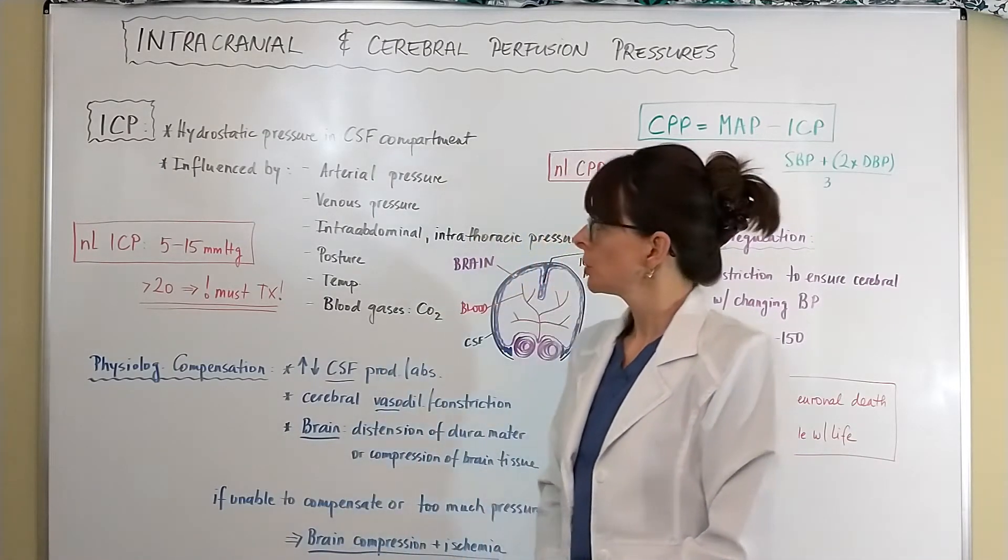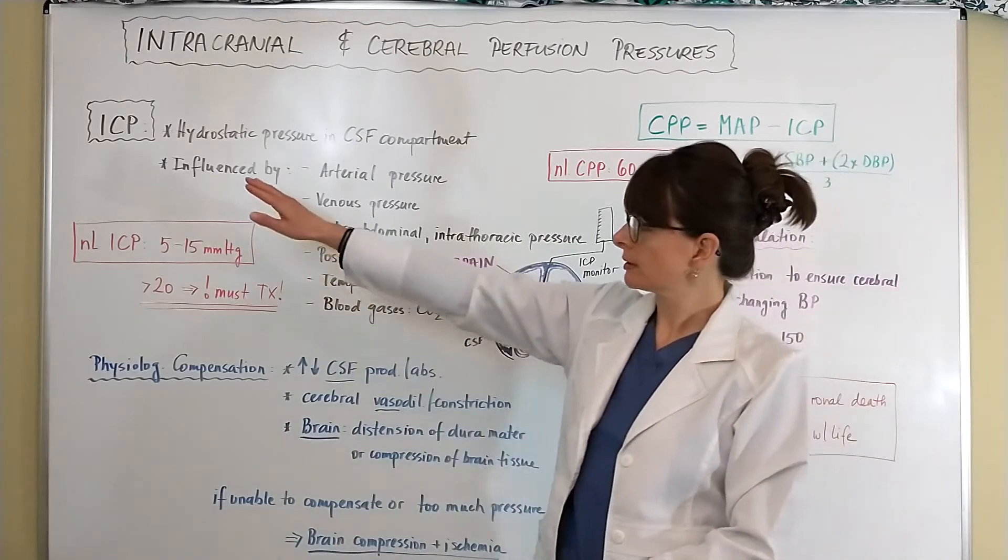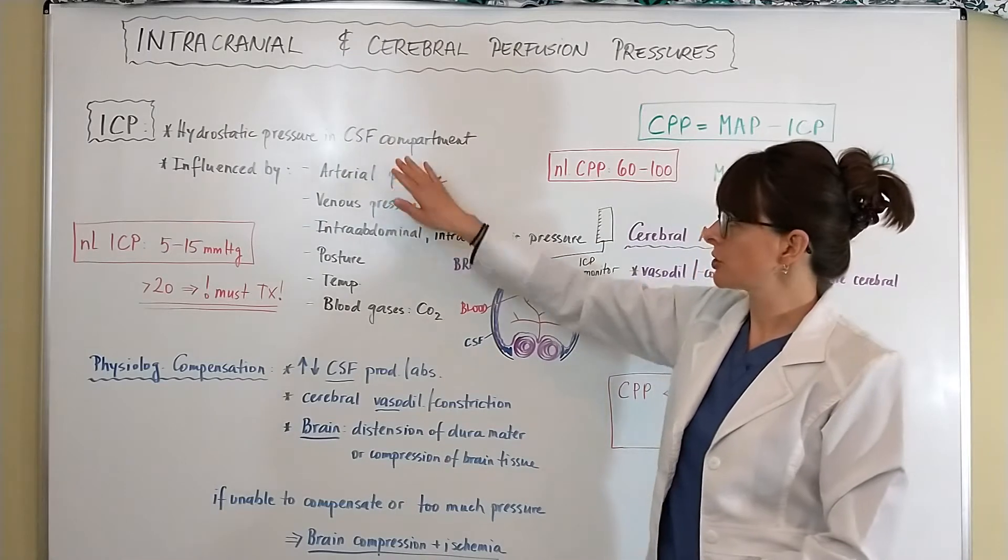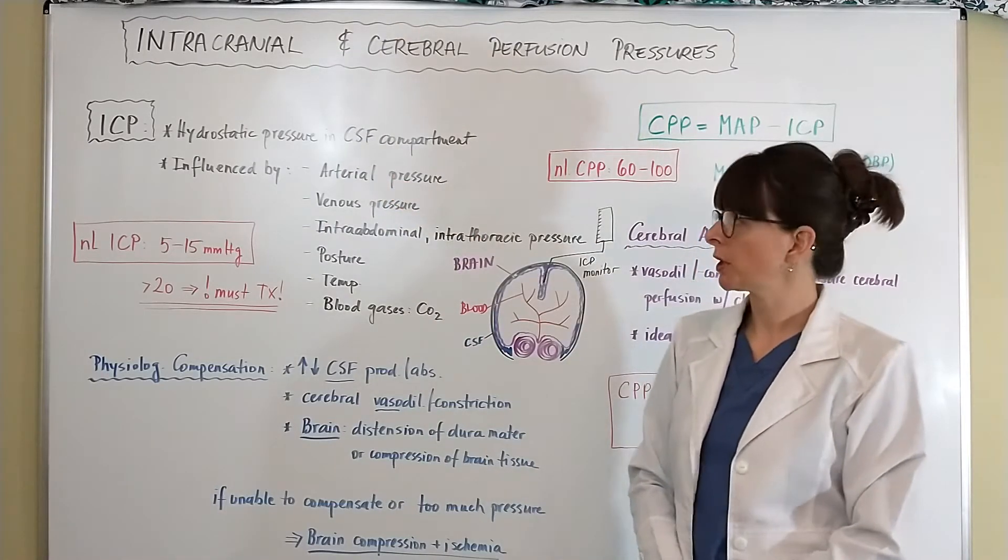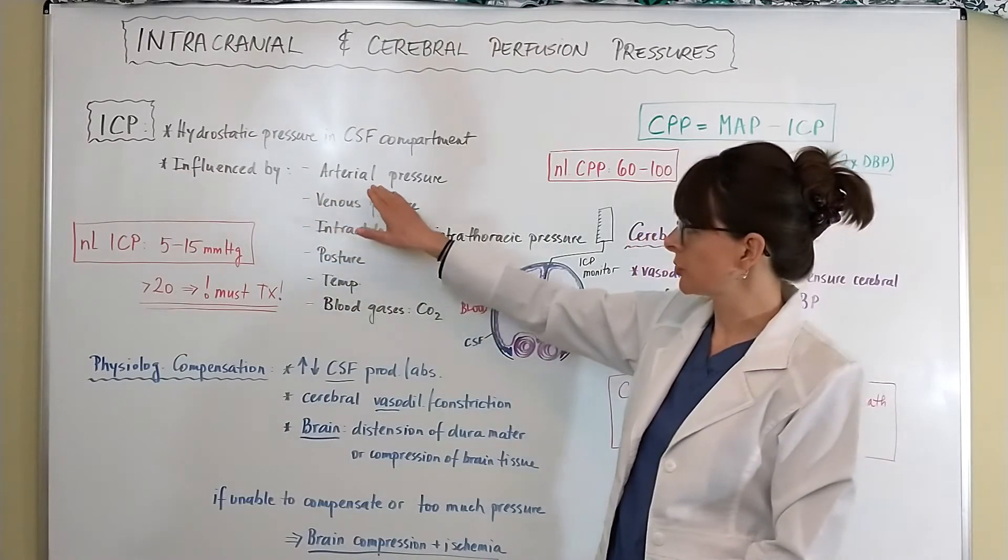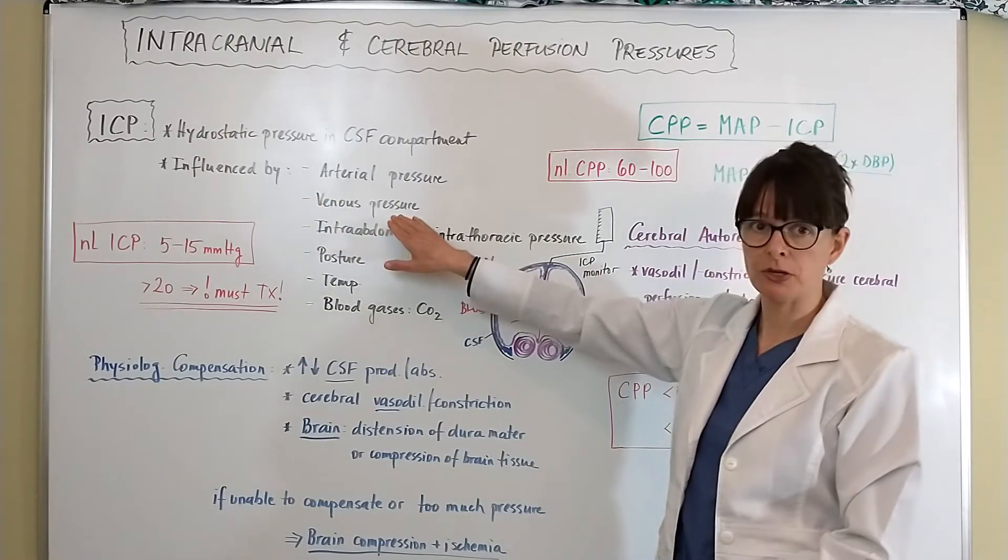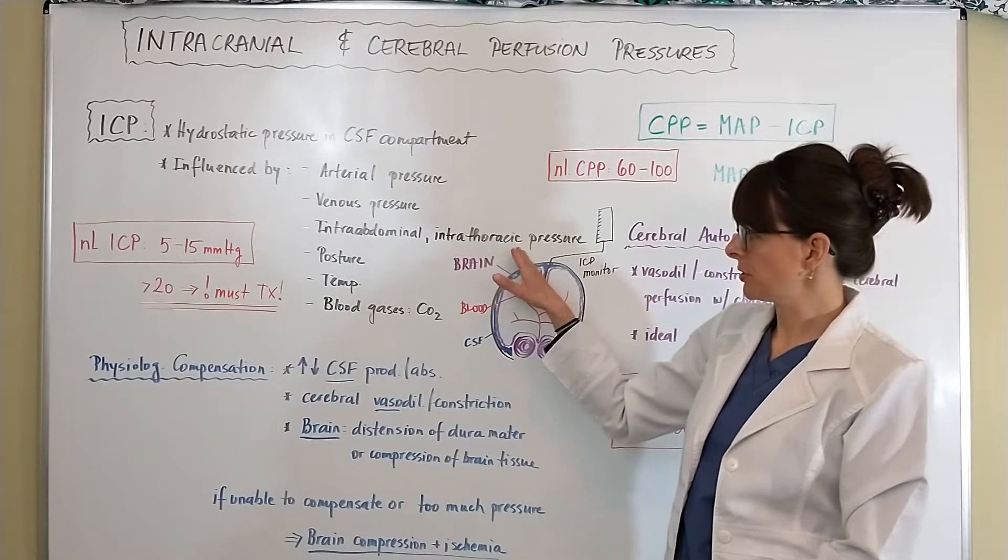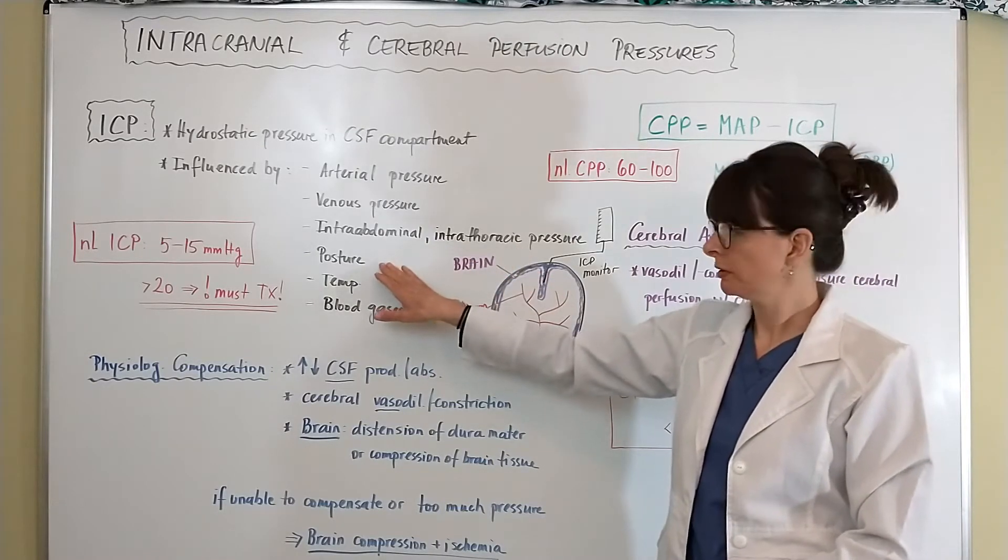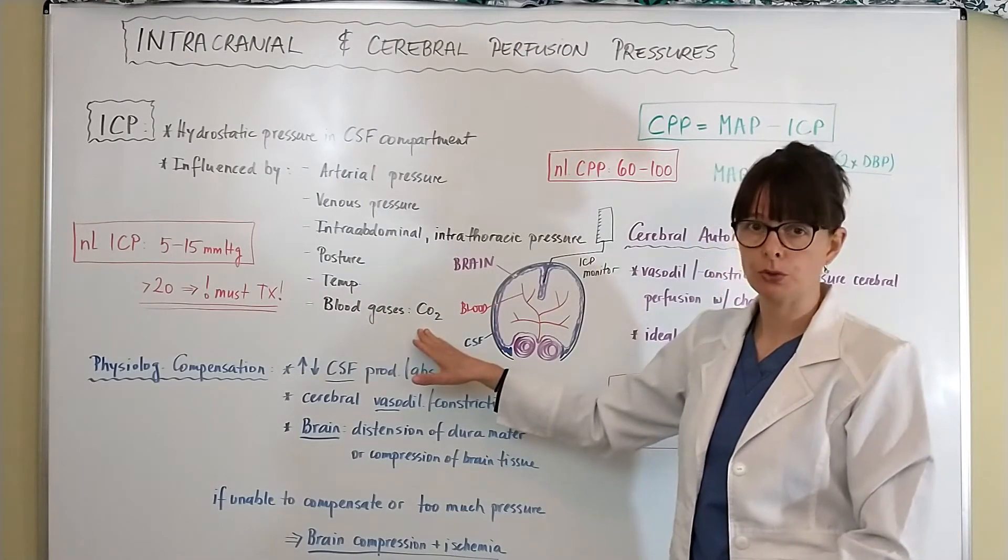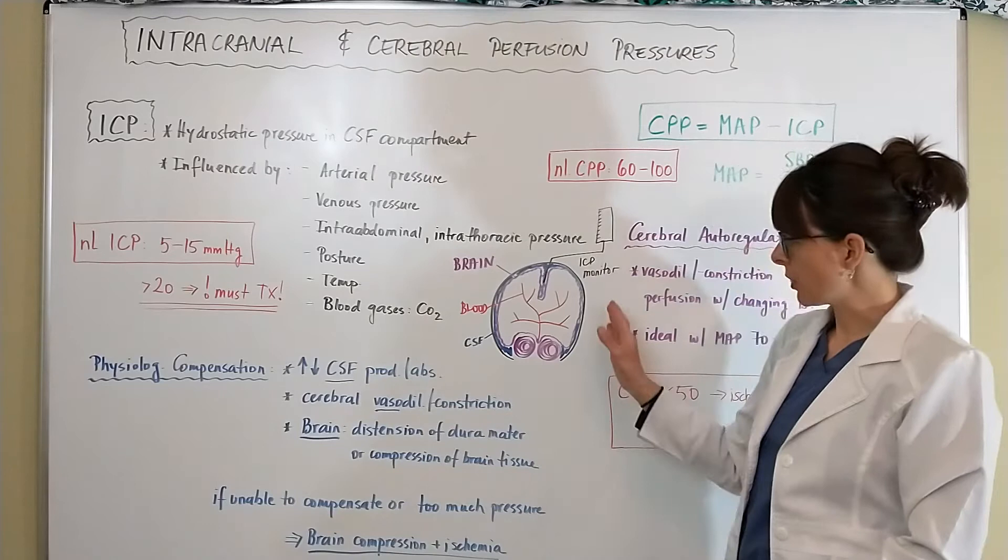Intracranial pressure is basically the hydrostatic pressure that we can measure in the CSF compartment of the head, and it is influenced by the arterial pressure, the venous pressure, as well as intra-abdominal and intrathoracic pressures, the patient's posture, the body temperature, and then blood gases, specifically CO2.